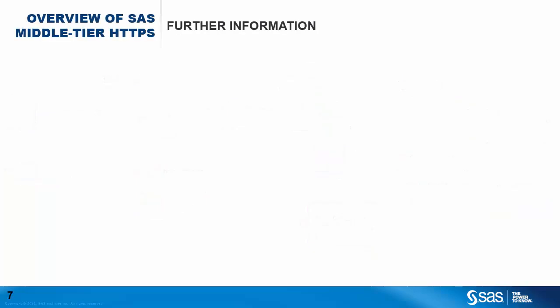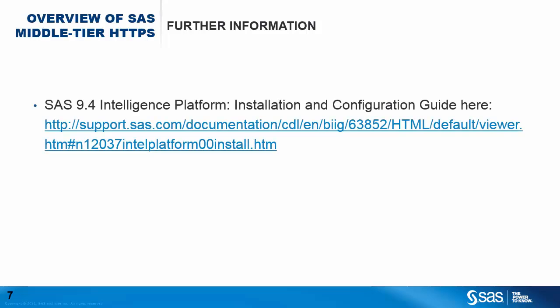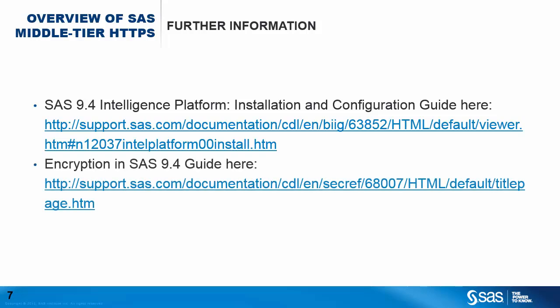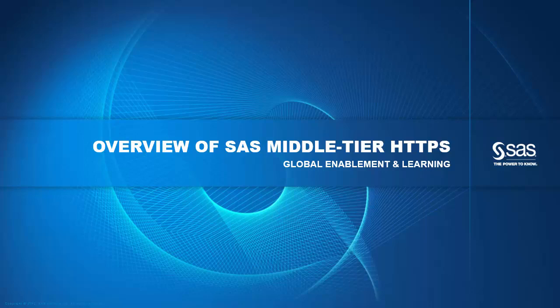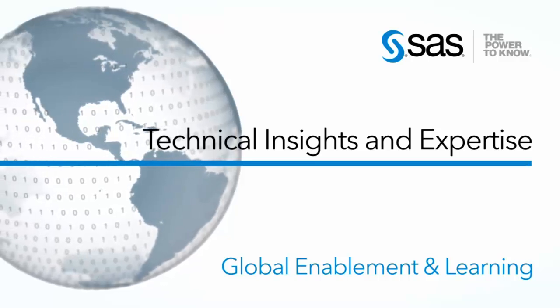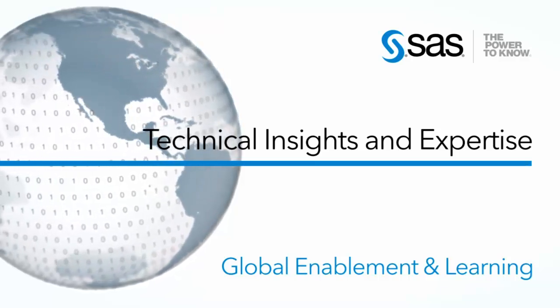For more information on using HTTPS with your SAS environment, see the SAS 9.4 Intelligence Platform Installation and Configuration Guide linked here, or the Encryption in SAS 9.4 guide also linked. Hopefully this has given you a good overview of what's happening within the different components of the middle tier when they are configured for HTTPS. This was just an overview and as such we did not dive into detail on how things are configured — this should just give you an idea of the process flow. Thank you, and check back with your global enablement and learning team for more technical insights.